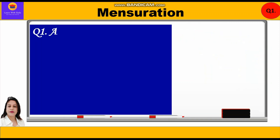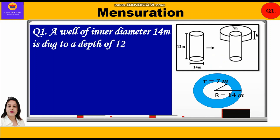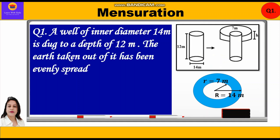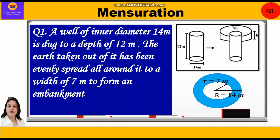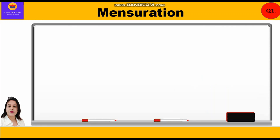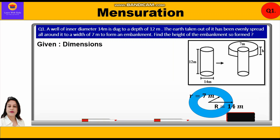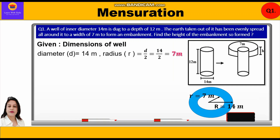Now let's start with question number one. A well of inner diameter 14 meters is dug to a depth of 12 meters. The given dimensions of the well: diameter is 14 meters, so radius is 14 ÷ 2 = 7 meters, and the depth of the well, which is the height, is equal to 12 meters.